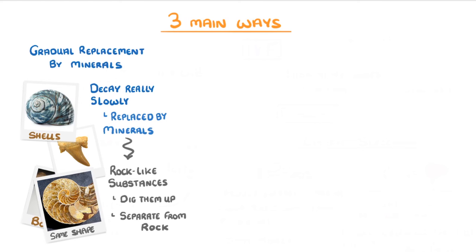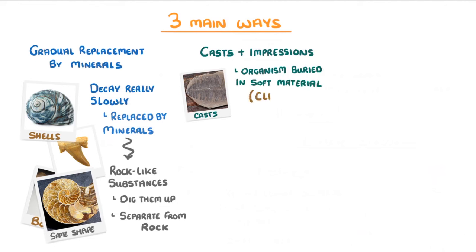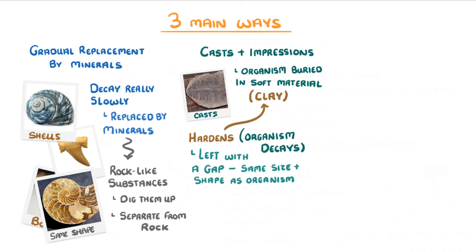Two similar types of fossil are casts and impressions. We get casts when an organism is buried in a soft material like clay, and as the clay hardens the organism decays and we're left with a gap that's the same size and shape as the organism was. We often get casts of things like animal burrows or plant roots.